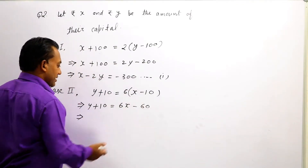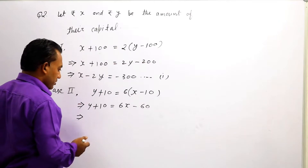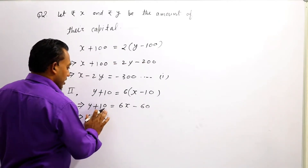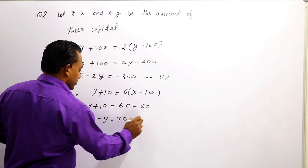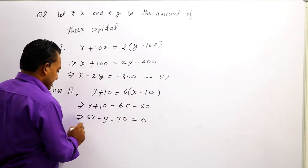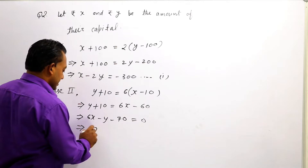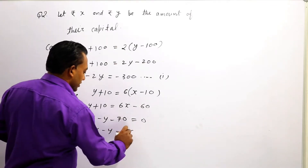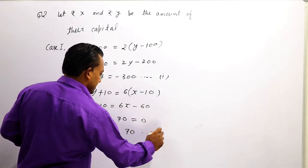Bringing all terms to one side: 6x - y = 70. This is our second equation.